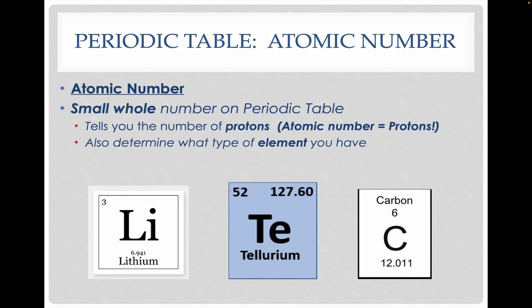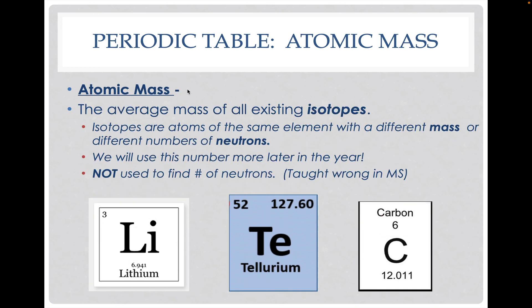Now from that, we're able to start looking at some different things on our periodic table. The first is called the atomic number. The atomic number is the small whole number that you're going to find on your different elements on the periodic table. That number matches the number of protons, and it's going to tell you what element we have. So lithium is always a three because it has three protons in it.